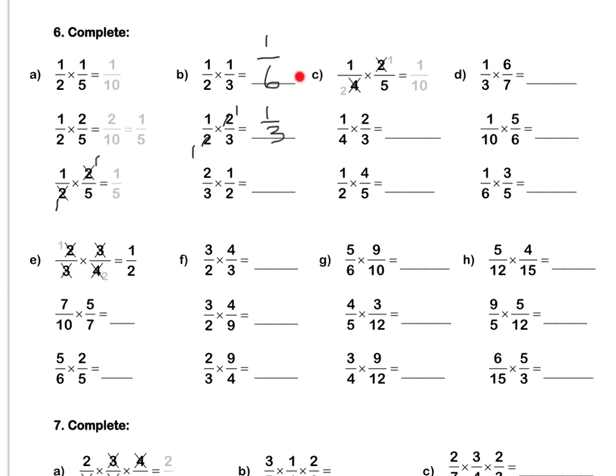Lastly, let's look at c together. A quarter times 2 fifths: we can simplify in our question. 2 and 4 are both divisible by 2: 2 divided by 2 is 1, and 4 divided by 2 is 2. Then we multiply out: 1 times 1 is 1, and 2 times 5 is 10.